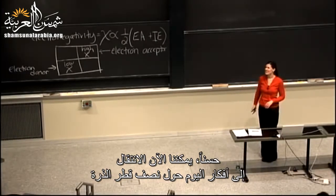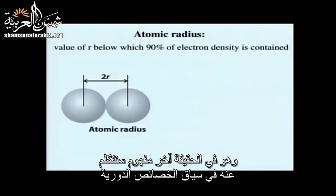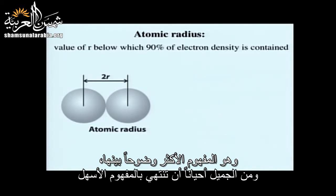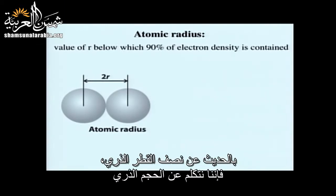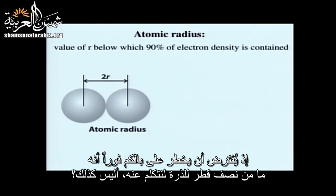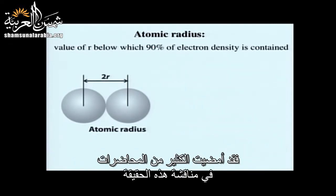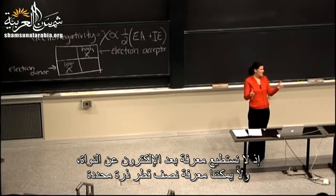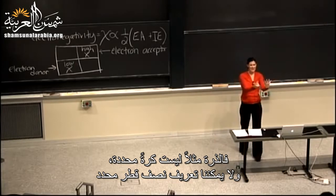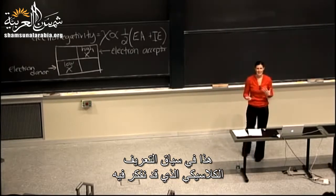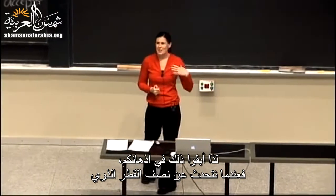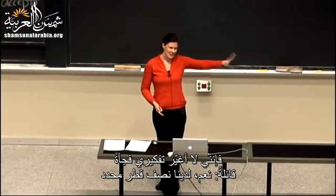Now we move to atomic radius — the last periodic trend. This is actually the most straightforward. Immediately it should come to mind that we don't have a strictly defined atomic radius, since we can't know exactly how far an electron is from the nucleus. An atom isn't a defined sphere, so we can't define an exact radius classically.